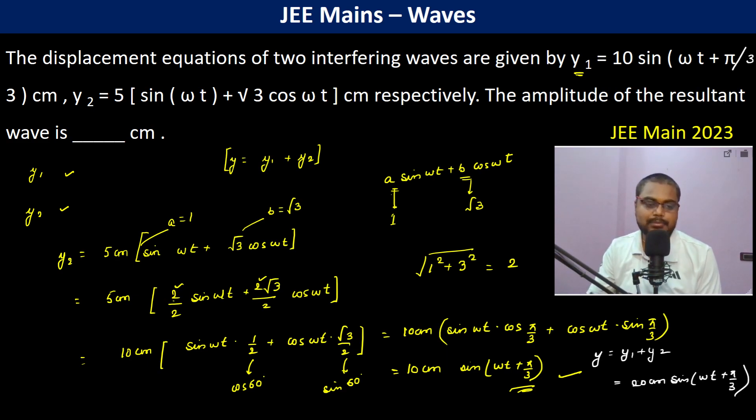Therefore, the amplitude of the resultant becomes 20 centimeter. When we are adding the waves, we just add them vectorially, and here because both of the waves are same, addition is quite simple.